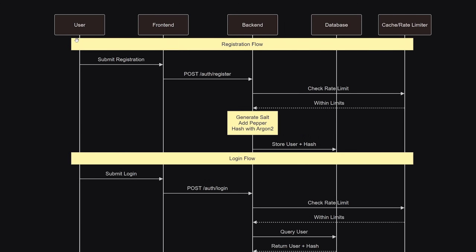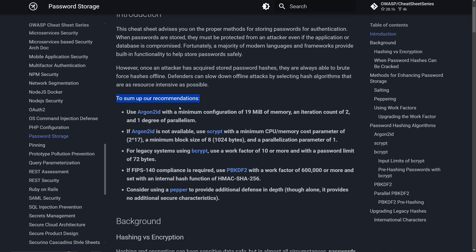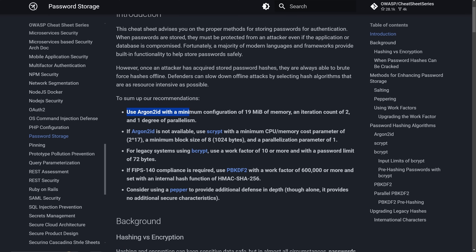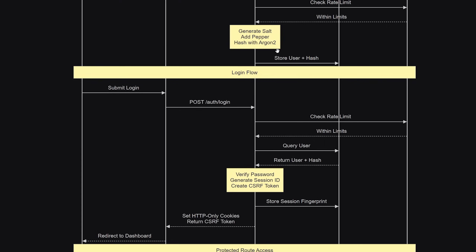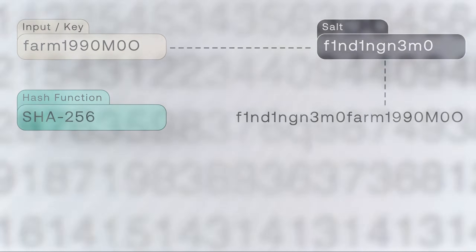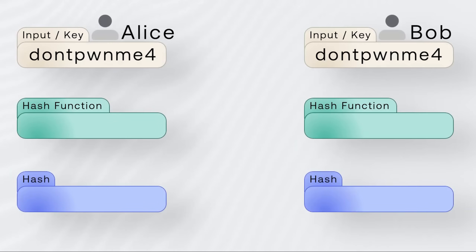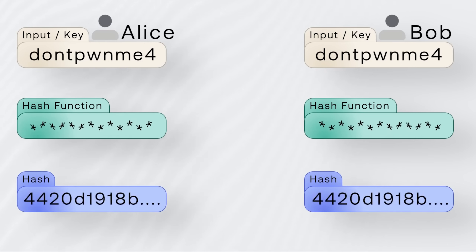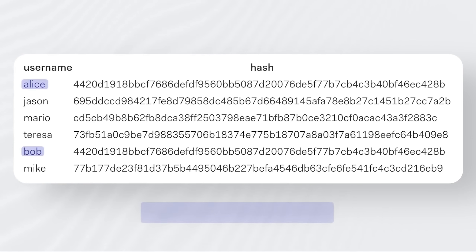First things first: user registration. When a new user signs up, a really important part is figuring out how to securely store their password. Luckily, you don't have to come up with your own hashing algorithm — you can use something like Argon2, which is the current November 2024 OWASP recommendation. It allows you to salt and pepper the password, hash it, and securely store it. Salting is when you add a random string to the password before you hash it so that all stored hashes are unique. Otherwise, if two users both use password123 with no salt, their hash values will be the same, and hackers using a rainbow table can crack one hash to open every account with that same hash.